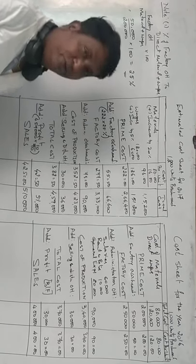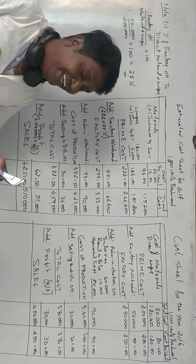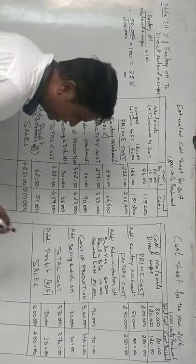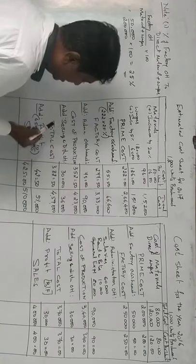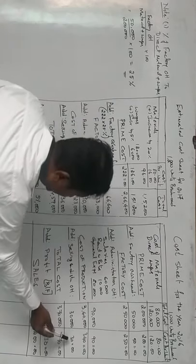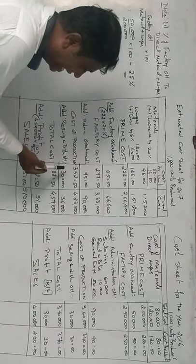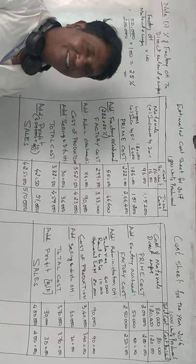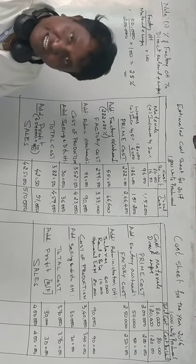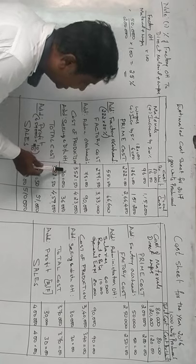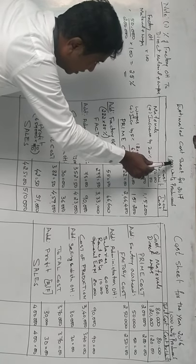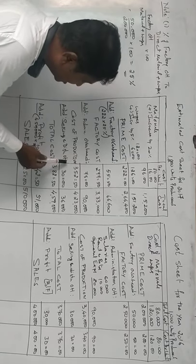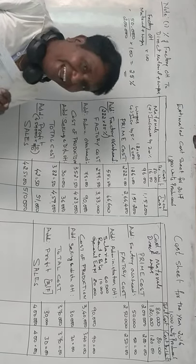For selling and distribution overhead: selling expenses per unit will remain unchanged. Selling expenses were 30 rupees per unit, so we keep it at 30 rupees. Multiplying 30 by 1,200 units gives 36,000 rupees. Adding cost of production and selling expenses gives total cost.